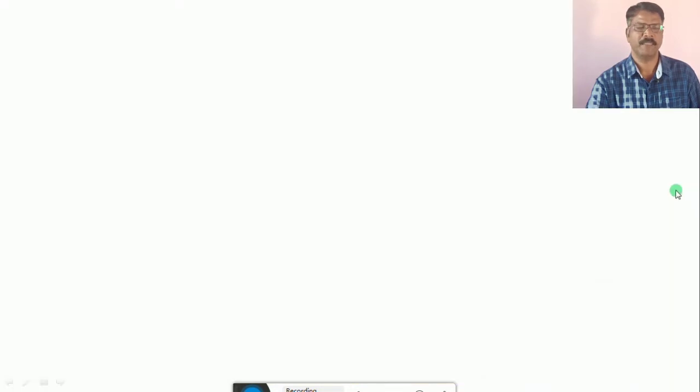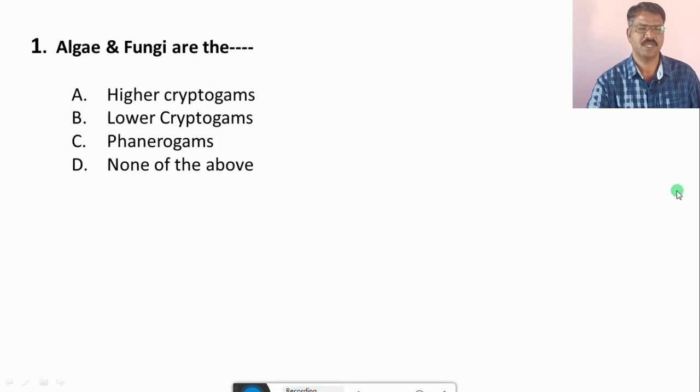Question number 1: Algae and Fungi are the... Their options are A. Higher Cryptogams, B. Lower Cryptogams, C. Phanerogams, D. None of the above. Their correct answer is B, that is Lower Cryptogams.